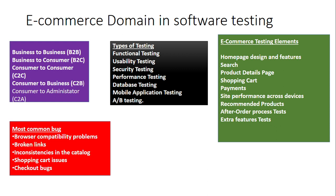Next is Consumer to Business, or C2B. This model allows individuals to sell goods and services to companies, and allows a business to receive value from consumers. In the C2B model, an individual or entrepreneur can sell their product or services to a business. Examples include writers, artists, UI/UX designers, and freelancers.